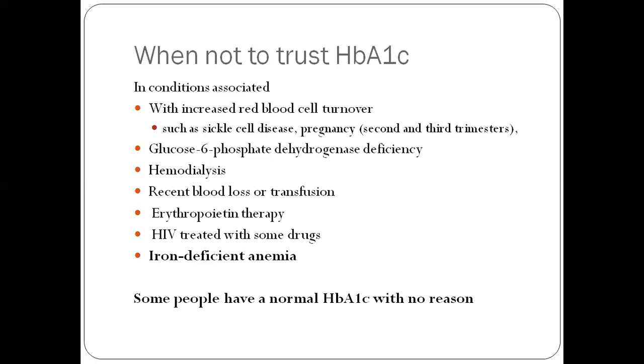Should I always trust HbA1c? You can't always do so. There are conditions in which you cannot trust: increased red blood cell turnover such as sickle cell disease or thalassemia, pregnancy especially in second and third trimesters, G6PD deficiency, hemodialysis, recent blood loss or transfusion, erythropoietin therapy, HIV treatment, treatment with some drugs, iron deficiency anemia. And some people have a normal HbA1c for no reason. I know a couple of patients who always have an HbA1c of 6.5 and the blood glucose goes to 200, 300, it doesn't budge.